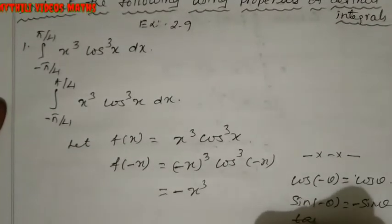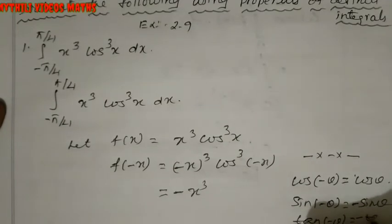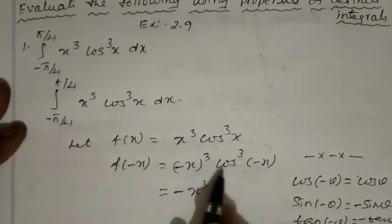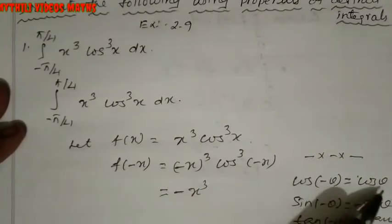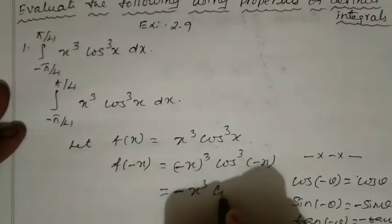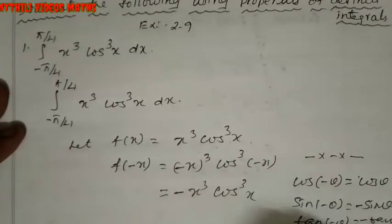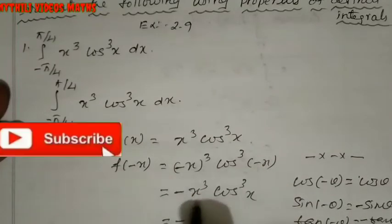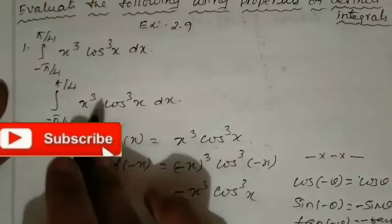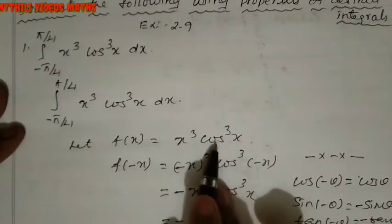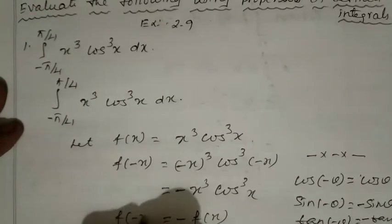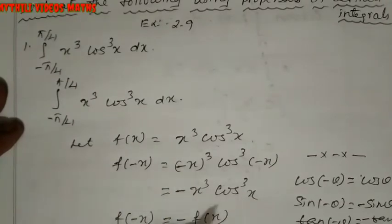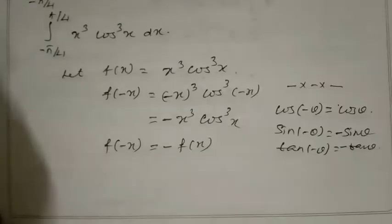Now for the cosine part: cos(minus θ) equals plus cos θ. So cos³(minus x) equals cos³x. Therefore f(minus x) equals minus x³ times cos³x, which is the same as minus f(x).